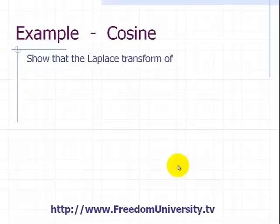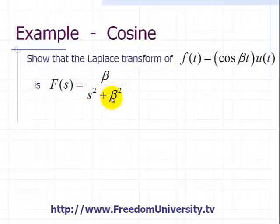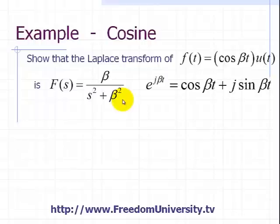So here's how we go about finding the Laplace transform of a cosine. We show that the Laplace transform is beta over s squared plus beta squared. And we need to know Euler's formula.